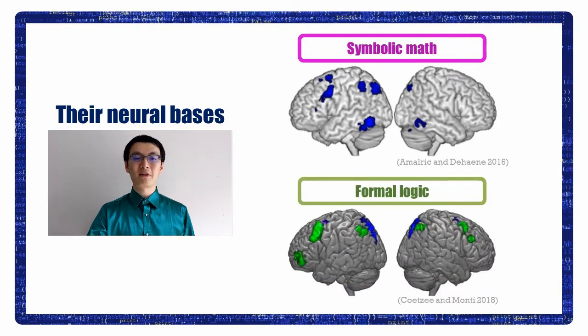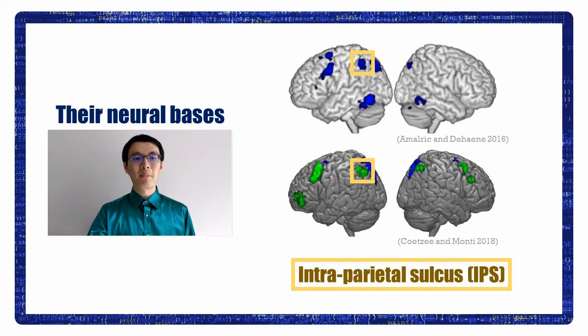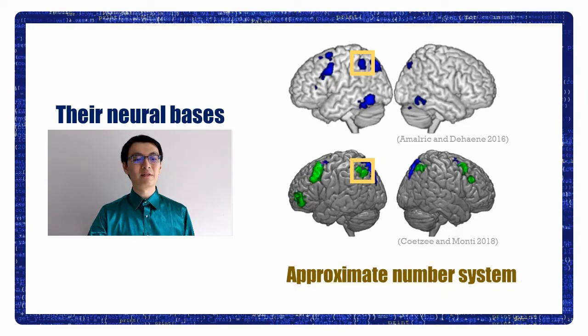And this, I mean the green patches, is the brain activation pattern for logical inference. Both math and logic seem to recruit the intraparietal sulcus. This is quite intriguing because the intraparietal sulcus has also been implicated in number approximation.